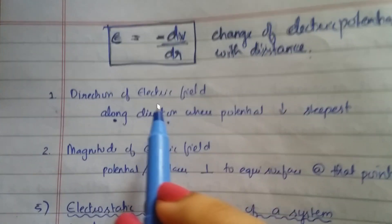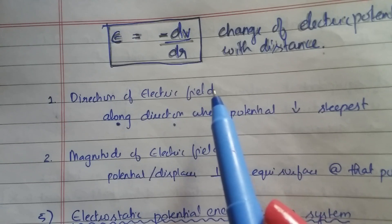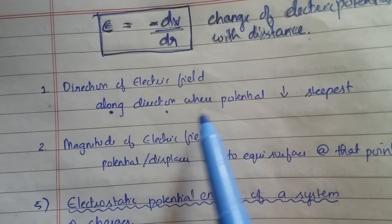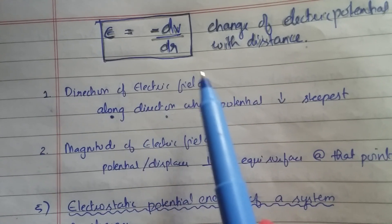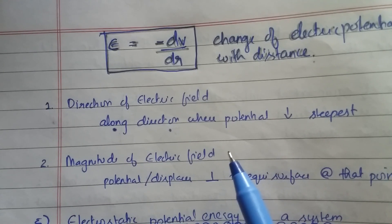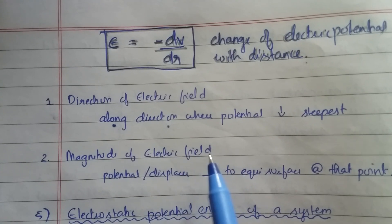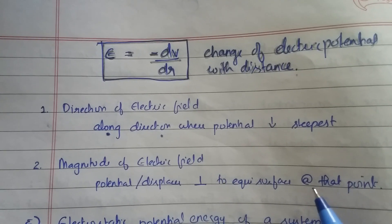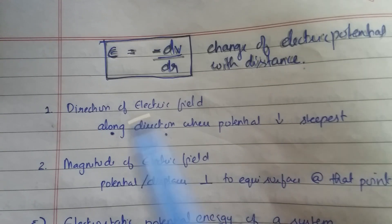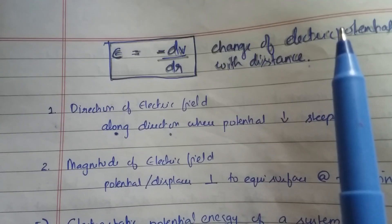From this relation we can know two things: the direction and magnitude of the electric field. The direction of the electric field is along the direction where the potential decreases steepest. The magnitude of the electric field equals the potential change per unit displacement perpendicular to the equipotential surface at that point. This relation is very important; the direction and magnitude points are good to know and may be asked for one mark.